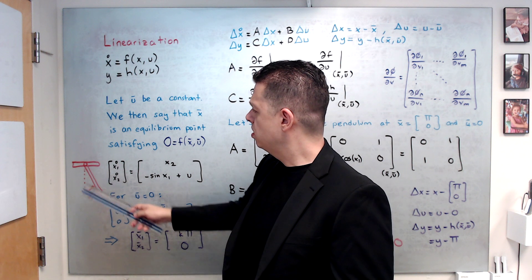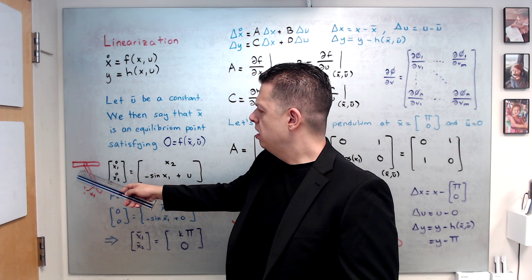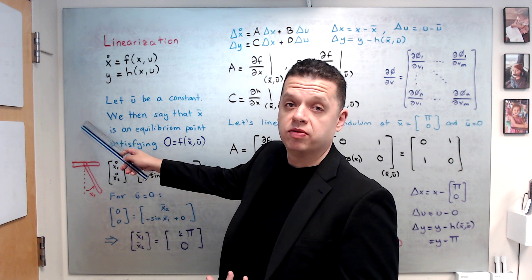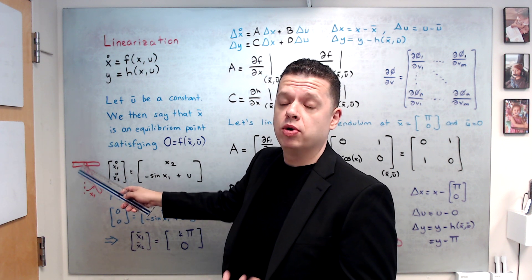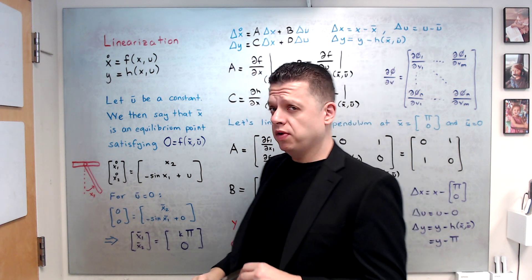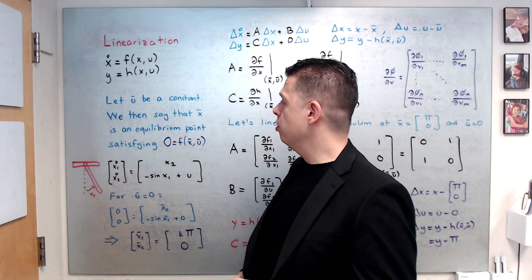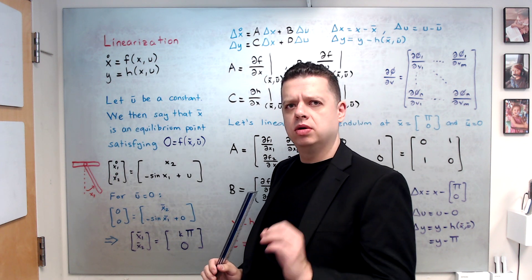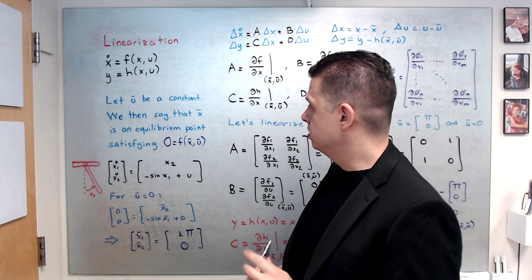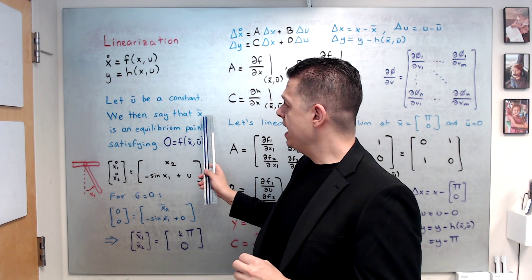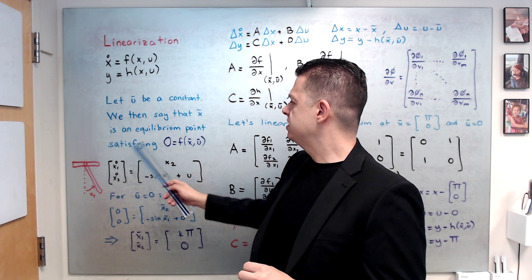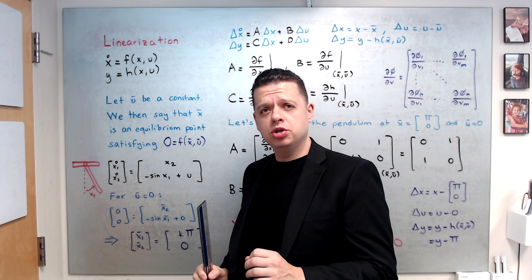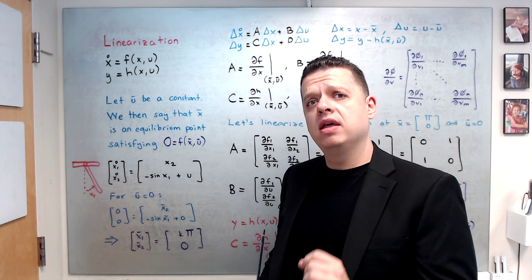For example, you can consider this pendulum. Are you going to control this pendulum on the backward position or upward position? It has two equilibrium points that I'm going to show in a second. First of all, the formal definition of the equilibrium point. Let u bar be a constant. We are setting the control signal or input to this dynamical system to be a constant. We then say that x bar is an equilibrium point that satisfies this equation.